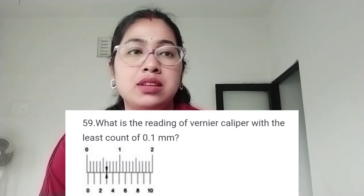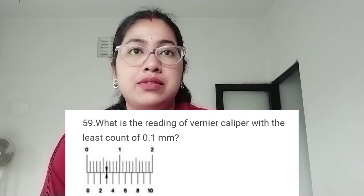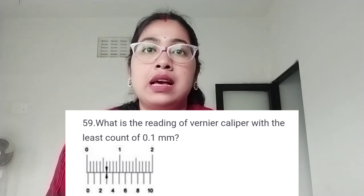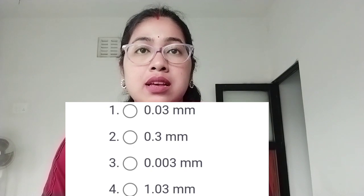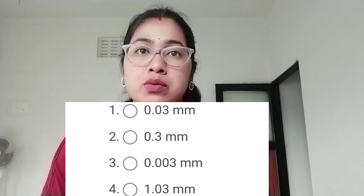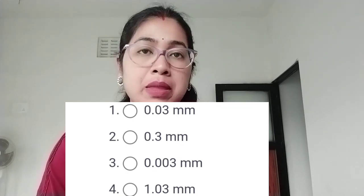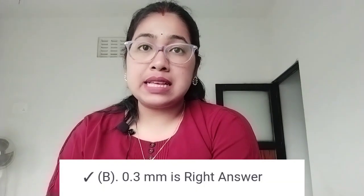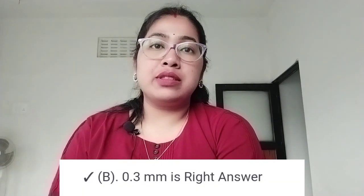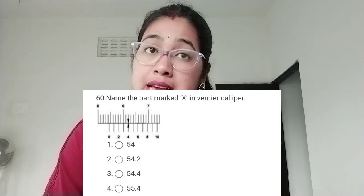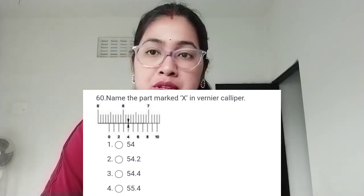Second last question: what is the reading of the vernier caliper with a least count of 0.1 mm? Option 1: 0.3 mm. Option 2: 0.3 mm. Option 3: 0.003 mm. Option 4: 1.03 mm. The correct answer is option B, 0.3 mm.